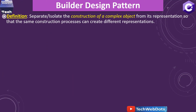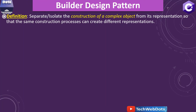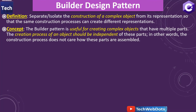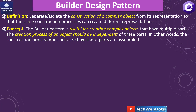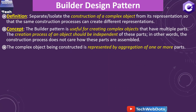Let's go by definition first. The builder design pattern separates, or isolates, the construction of a complex object from its representation, so that the same construction process can create different representations. The builder pattern is useful for creating complex objects that have multiple parts. The creation process should be independent of these parts — the construction process does not care how these parts are assembled. The complex object is represented by aggregation of one or more parts.